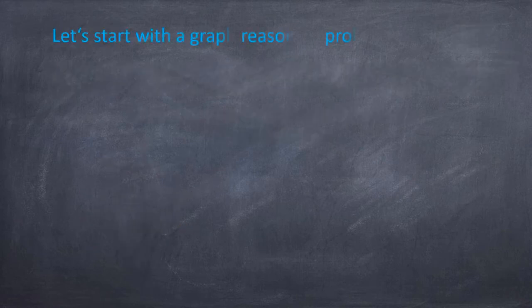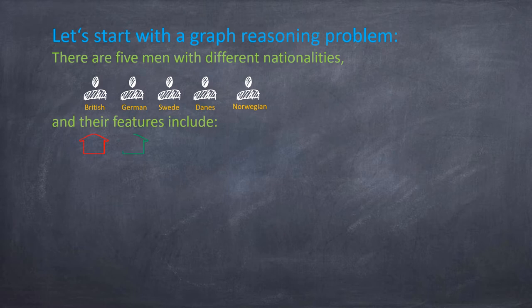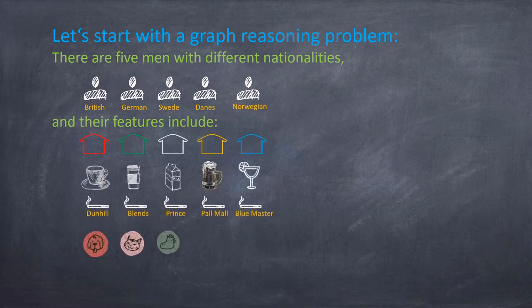Let's start with a graph reasoning problem. There are five men with different nationalities. They live in firehouses of different colors. Everyone drinks a particular beverage, smokes different cigarettes, and keeps different pets.